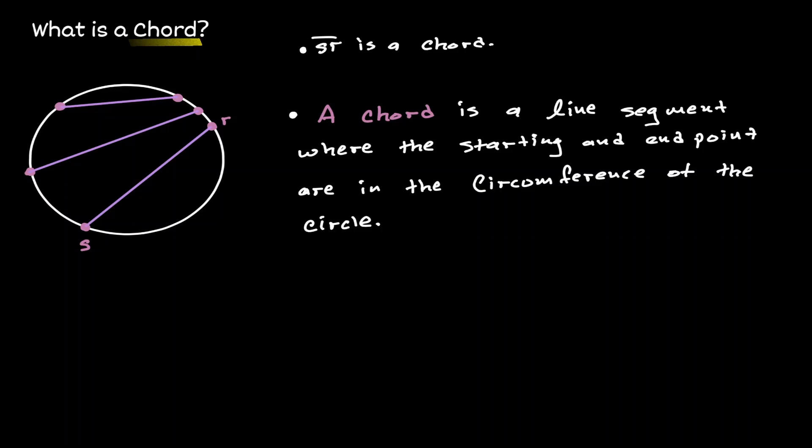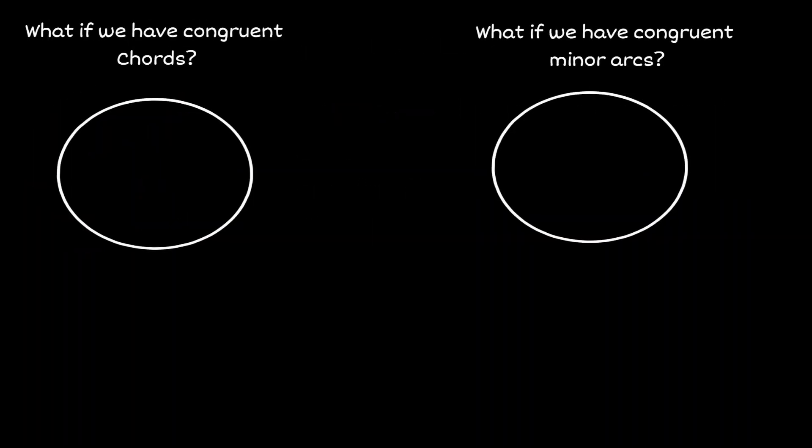Let's consider a specific scenario: what if we have two chords and they are congruent to each other? Let's draw them out. So let's consider the chord RS and let's consider the chord NM.